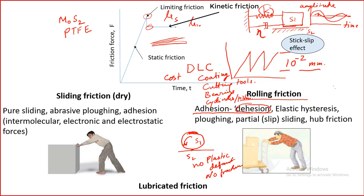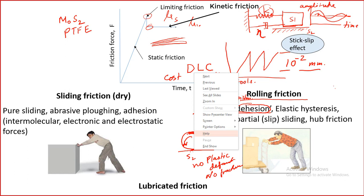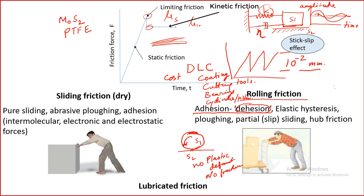In adhesion, when a contact point on solid 1 comes to solid 2 there will be adhesion between them — that point will have some attraction to S2. At the next state that point will go out of contact — that is deadhesion. So adhesion and deadhesion happen. Another type of action that happens is elastic hysteresis.